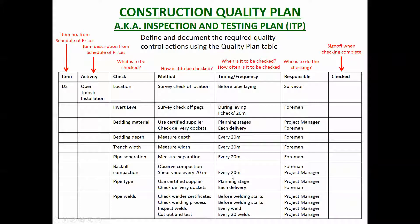Next is when you're going to do it — in this case, every 20 meters of pipeline for some checks, before laying the pipe for the location check, and checking welder certificates before welding starts. Then who's responsible. This becomes a to-do list for the project manager: check that we're using a certified supplier, carry out shear vane tests every 20 meters, check the welder certificates. These are the things to do as part of this work package to ensure we meet the project requirements.